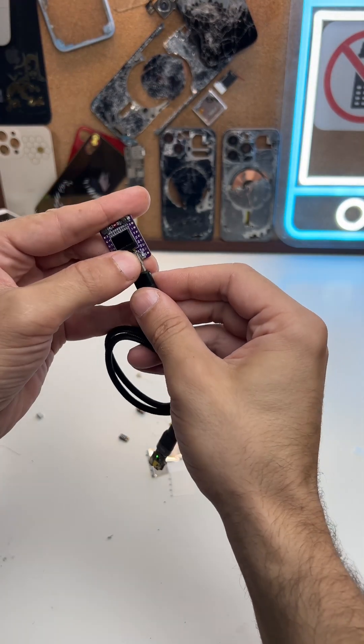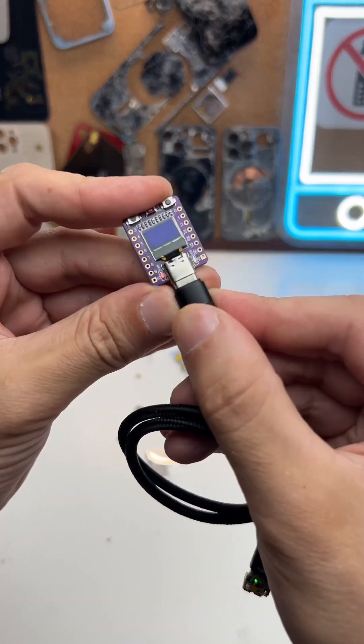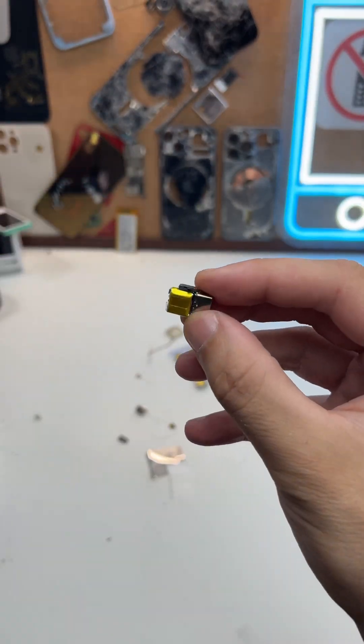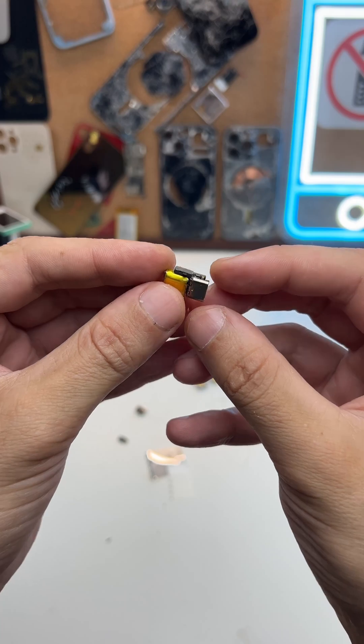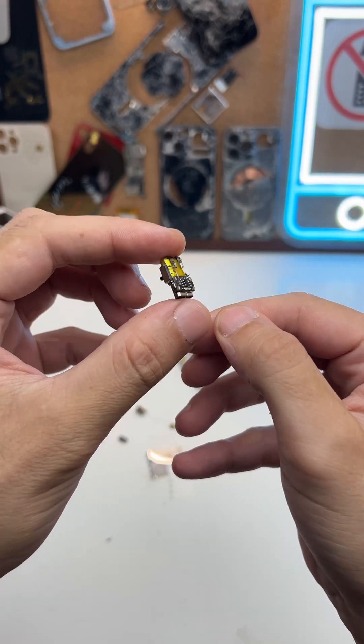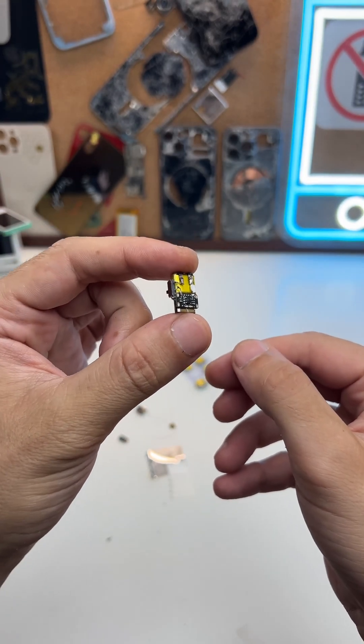It kind of works, but it doesn't power on the screen. I know this is already on a pointless level, but I want to try something else. I want to charge it the other way. Let's see if that will work.